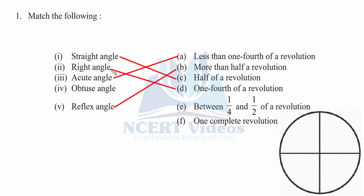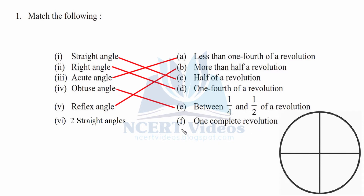Part e: between one fourth and half of a revolution — that is, it falls between a right angle and a straight angle — it is called an obtuse angle. So we connect e with the corresponding option. We don't have a match for one complete revolution, but from previous exercises we know it equals two straight angles: going halfway is one straight angle and returning makes another, giving two straight angles for one complete revolution. That completes question number one.